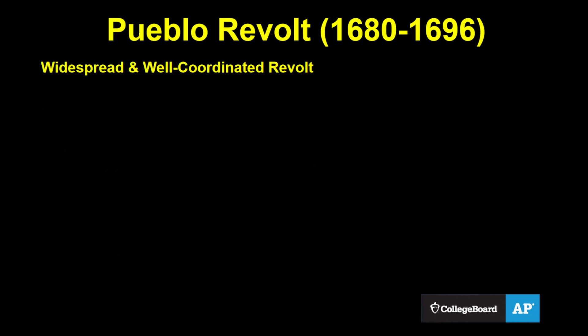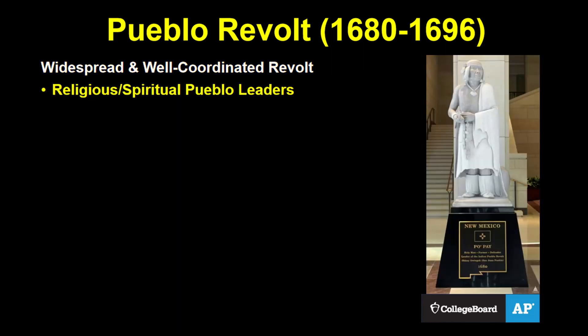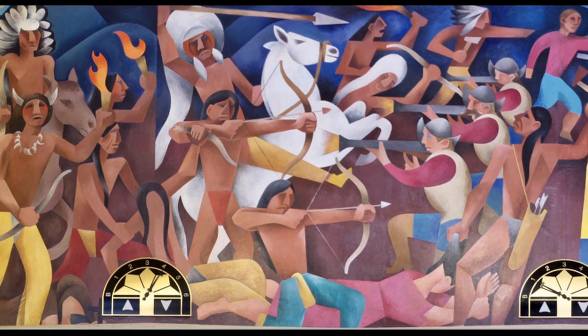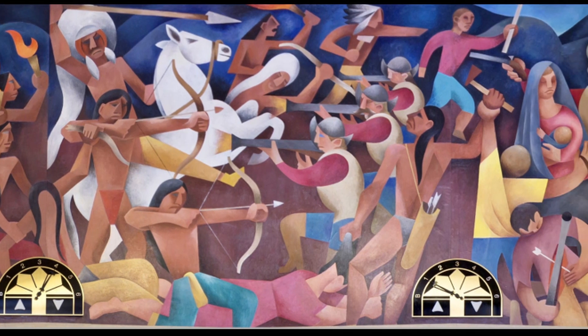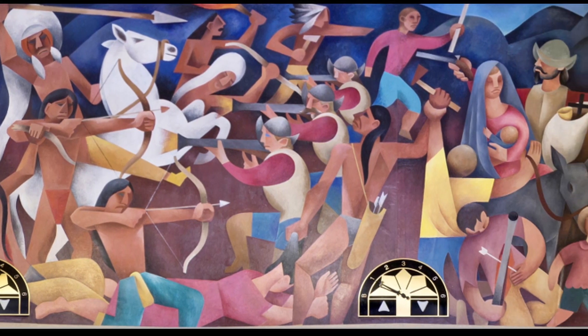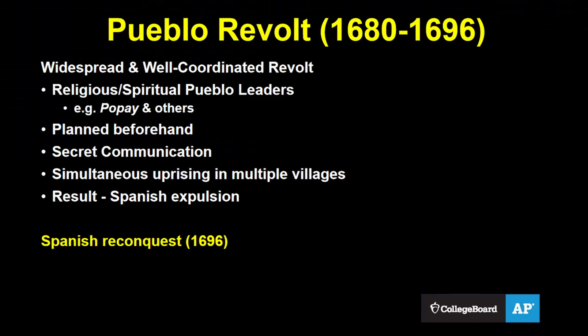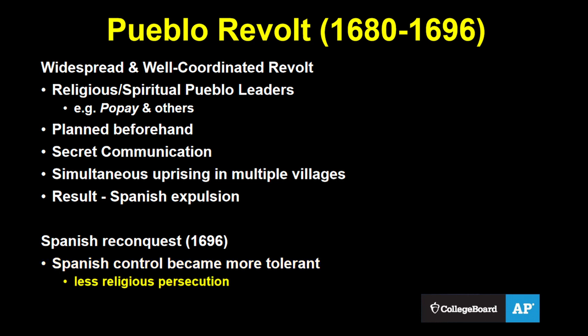The Pueblo Revolt of 1680 was most notable because of how widespread and well-coordinated it was. It was largely led by spiritual and religious leaders, most famously Popé. They planned it beforehand, communicating secretly and agreeing to strike at the same time in multiple villages. The result was that the Spanish were expelled and the Pueblo gained their independence. Eventually the Pueblo were reconquered, but the Spanish realized they would have to be more tolerant of indigenous religion, so persecution was substantially less than before.